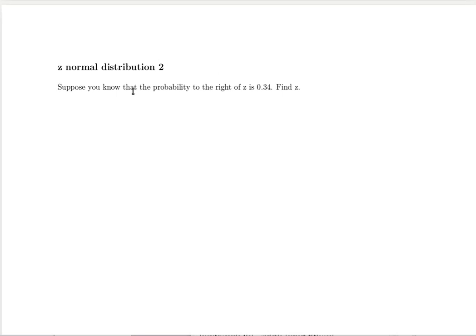This problem is proposed in one of Catherine Cossack's videos. Suppose you know that the probability to the right of Z is 0.34. Find that Z value.